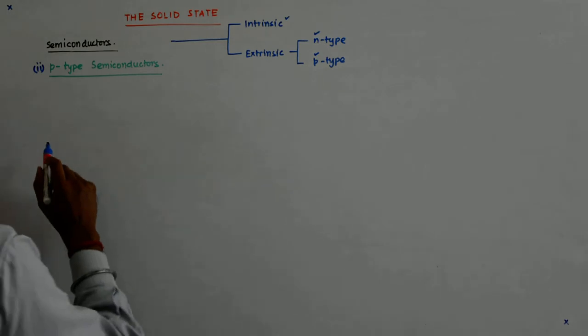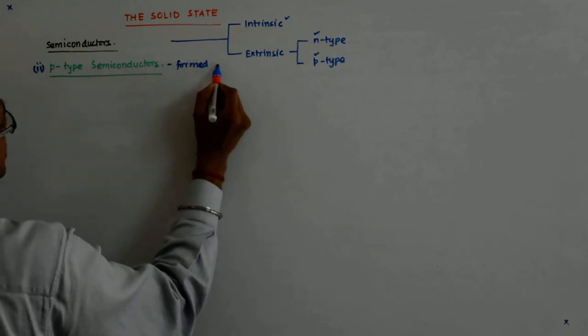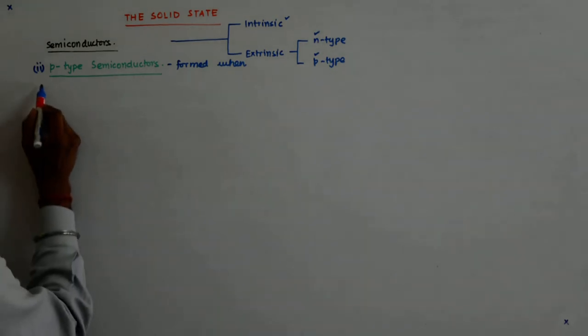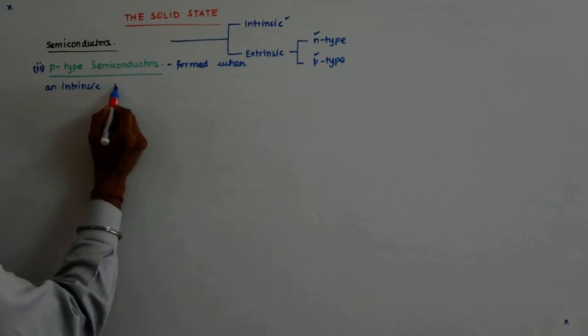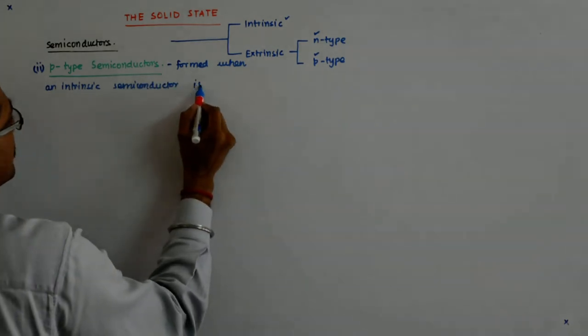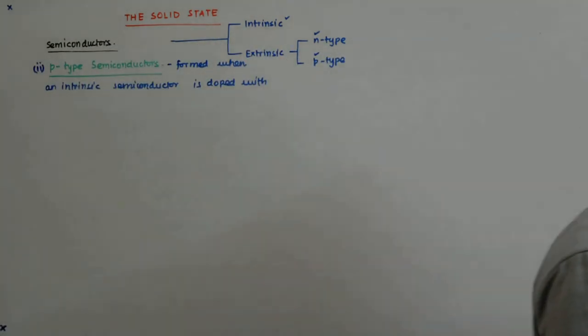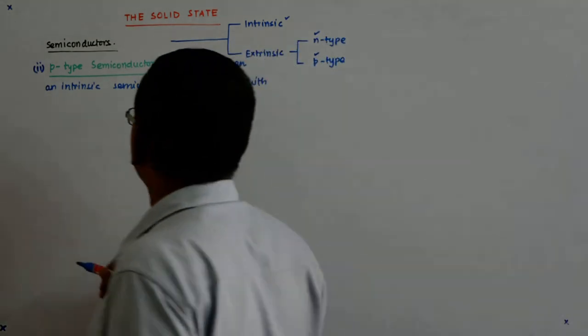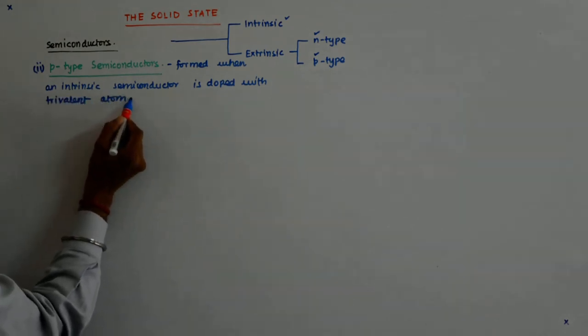P-type semiconductors are formed when an intrinsic semiconductor is doped with trivalent atoms, like boron.